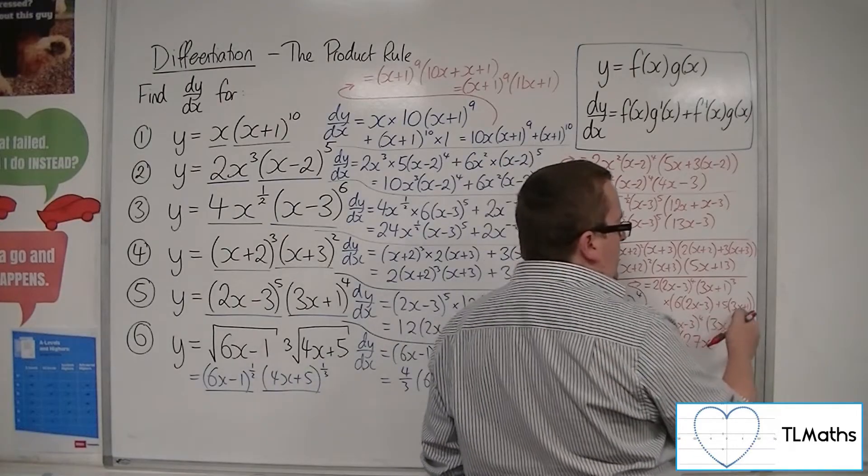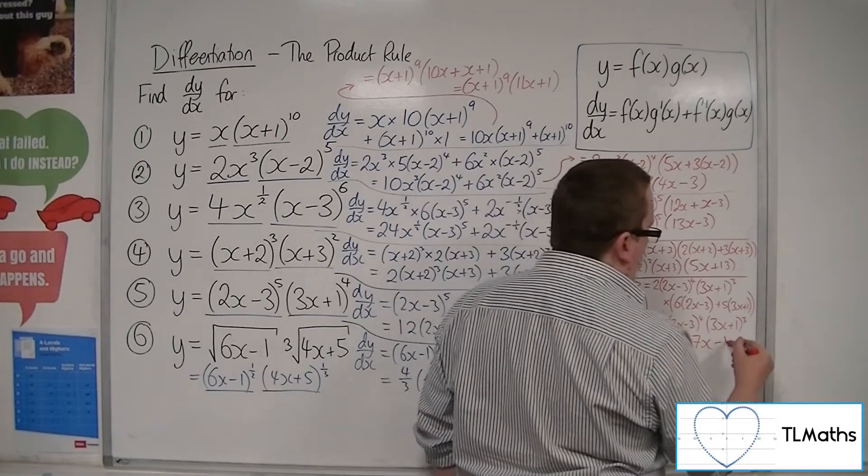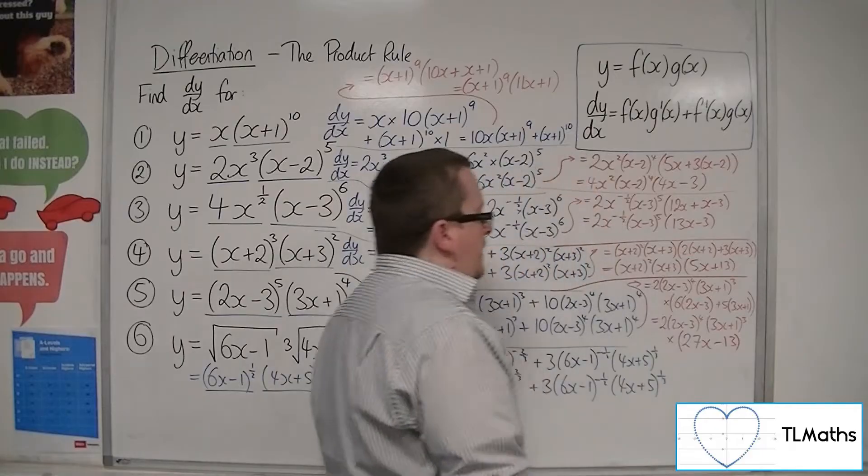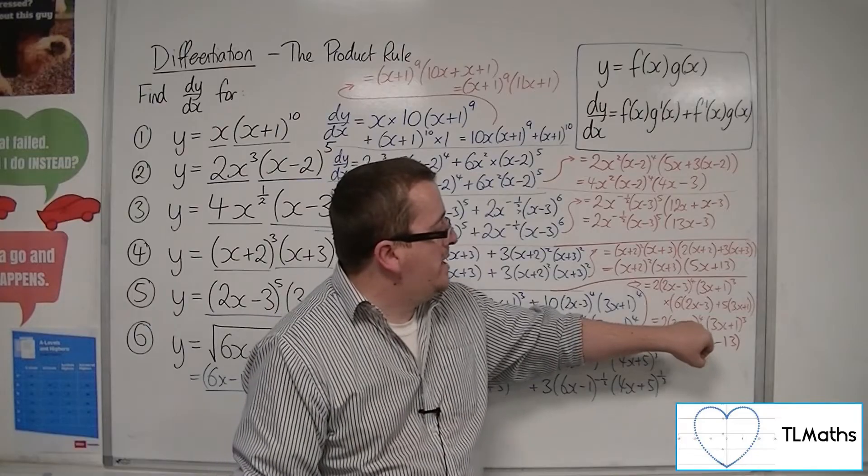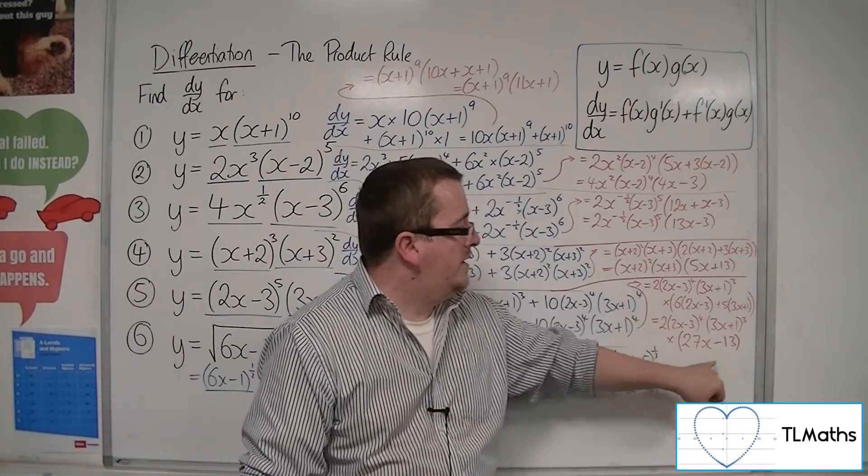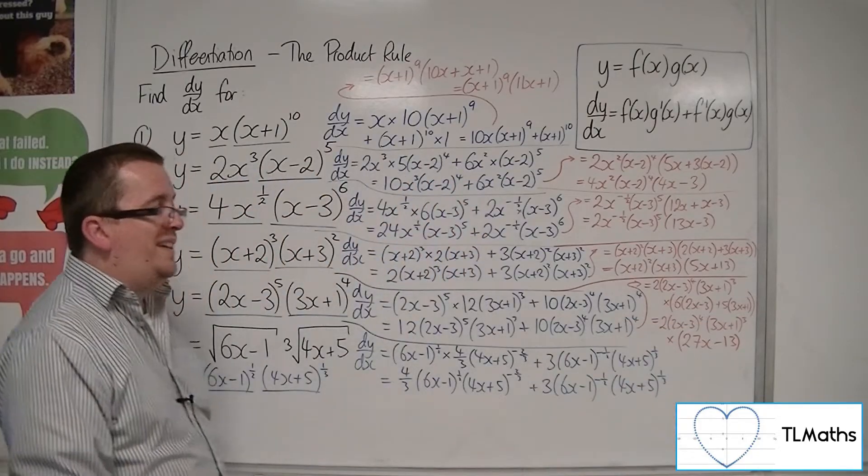Then I've got -18 plus 5, so -13. So if I was asked to find the stationary points of that curve, I know that they sit at 3/2, -1/3, and 13/27.